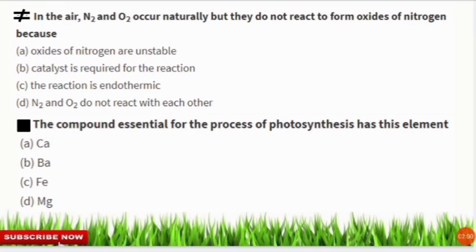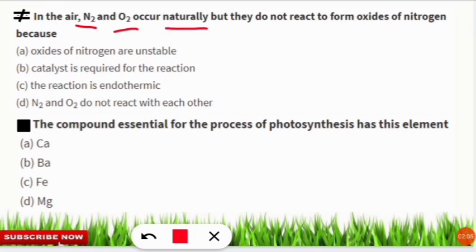The first question is: in the atmosphere, nitrogen and oxygen occur naturally but they do not react to form oxides of nitrogen — why? You should read all the options carefully. The reason why they are not forming oxides of nitrogen is option number three: the reaction is endothermic.